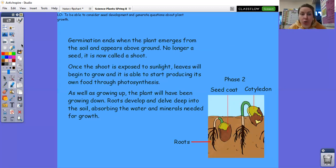And once the shoot is exposed to sunlight, leaves will then begin to grow and it's able to start producing its own food through photosynthesis. And as well as growing up, the plant will have been growing down. So underneath, you can see, it has developed roots at the same time. So as it's growing out of the ground, it's also growing into the ground. And it's important because that's where they get the water and the minerals needed from the growth. So let's see, that's the phase two.